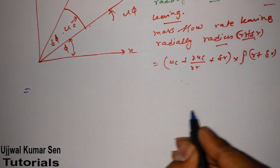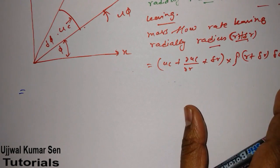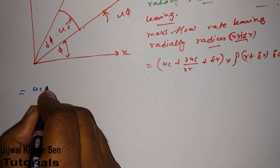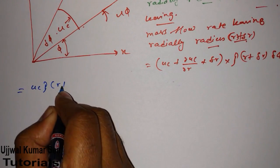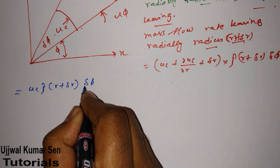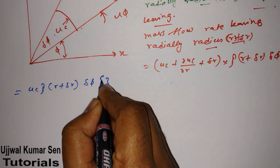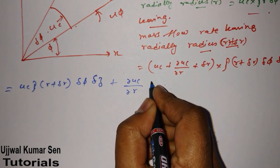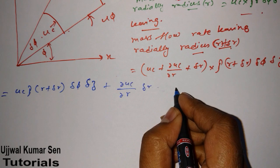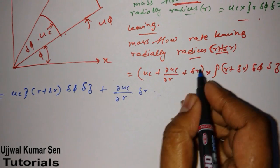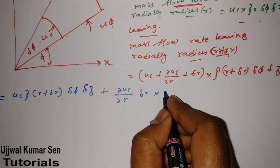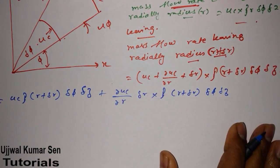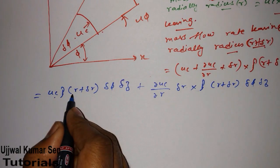We'll get four terms from the multiplication. First, multiply u_c with (r + δr): we get u_c · ρ · r · δφ · δz, plus u_c · ρ · δr · δφ · δz, plus ∂u_c/∂r · δr · δφ · δz · ρ · r, plus ∂u_c/∂r · δr · δr · δφ · δz · ρ. Now we have to multiply again and we'll get these terms.